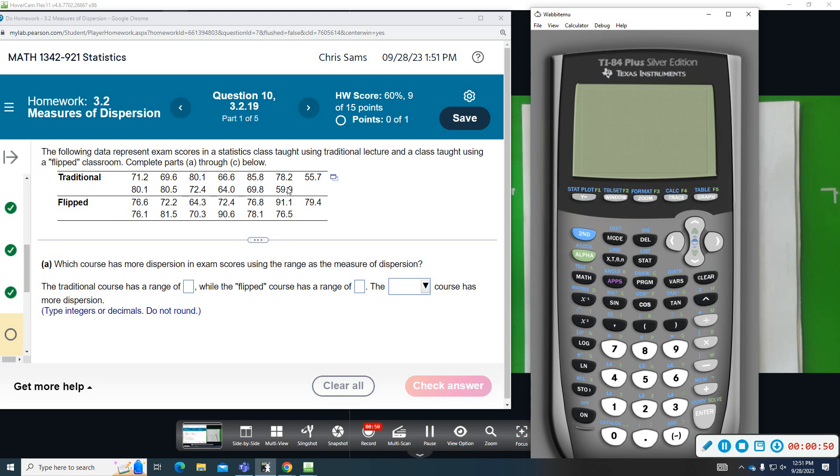I don't think there's anything smaller than 55.7. And then the largest score, 85.8. Okay, so using the range, 85.8 take away 55.7.